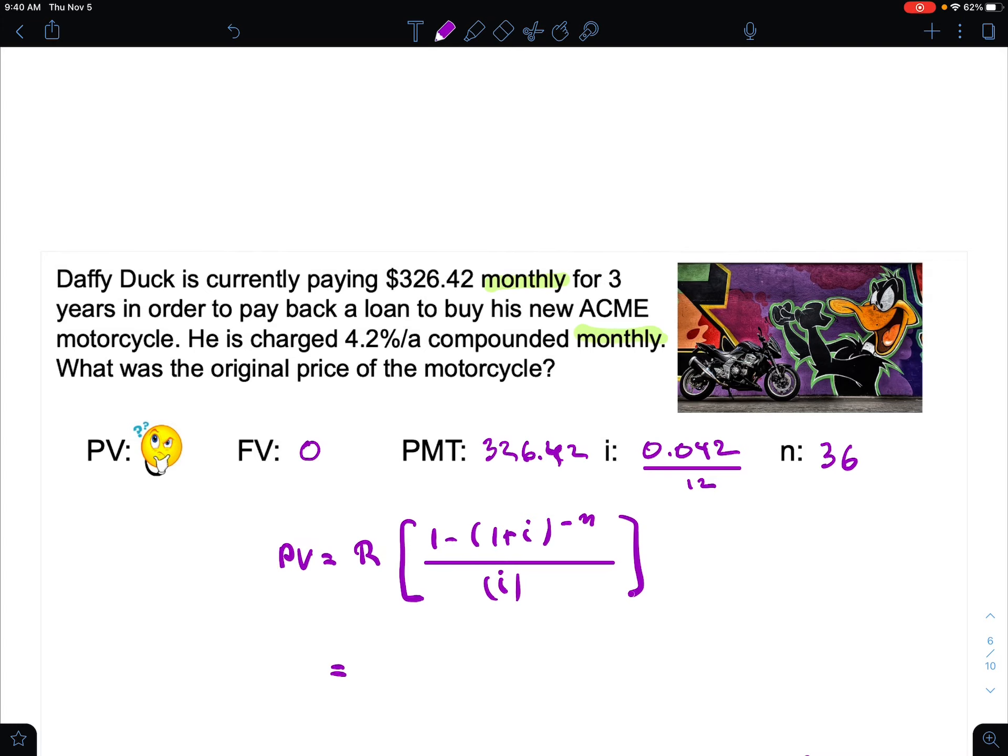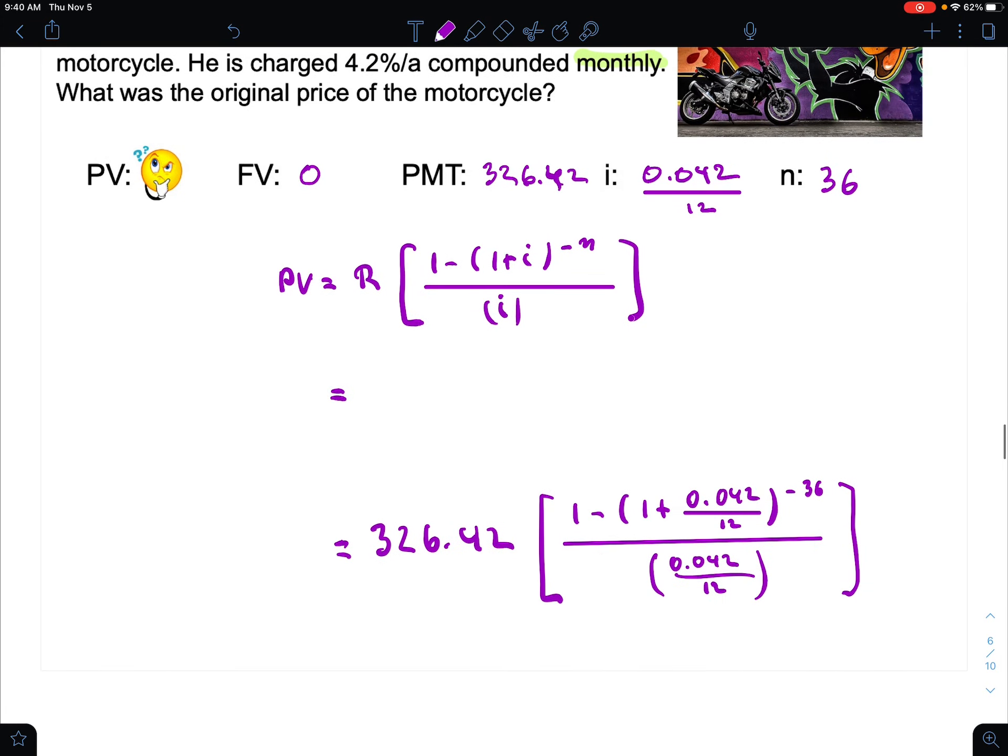Now we need to put the numbers in. I've already pre-loaded them, and here's what it should look like: 326.42 times big open bracket, 1 minus, bracket, 1 plus 0.042 divided by 12 to the negative 36, close bracket, divided by 0.042 divided by 12. Remember that should be negative 36, and make sure you have those brackets when you plug into your calculator.